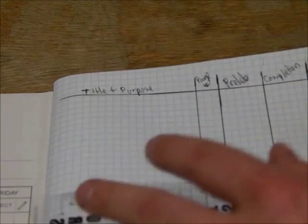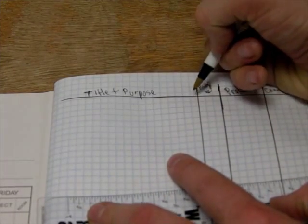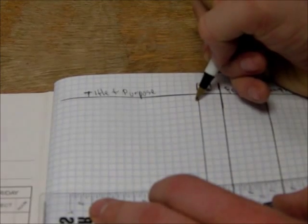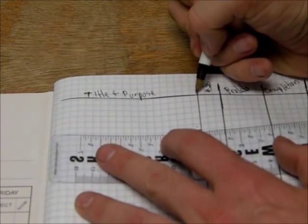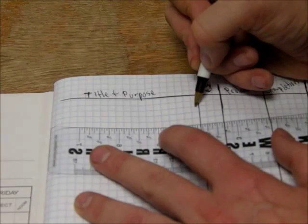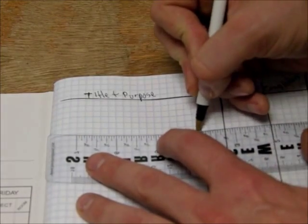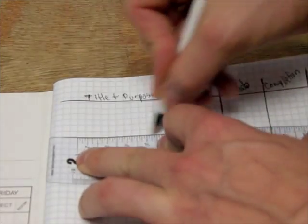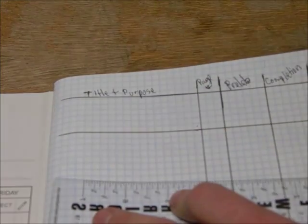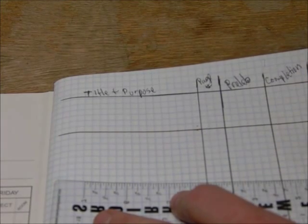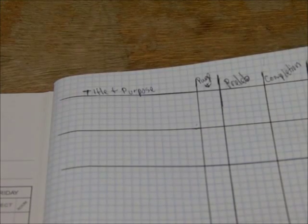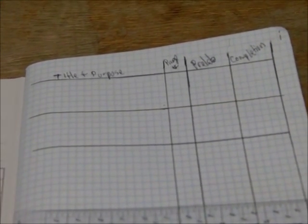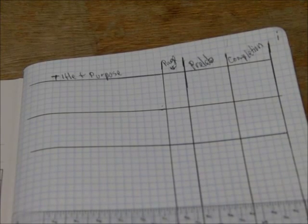Now that we have the top of the table set up, we're going to set up the rest of the page. What you're going to do is count down from the top line by the title and purpose by six squares. Two, three, four, five, six. I'm going to put a tick mark, and then from there, I'm going to draw a horizontal line all the way across my lab notebook. I'm going to do that again. Then you're going to do that for the entire page. Every six squares, draw a horizontal line.